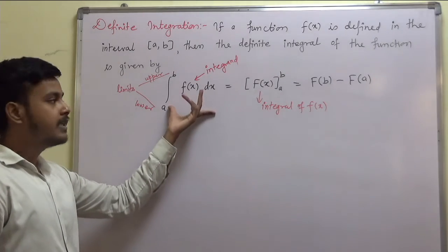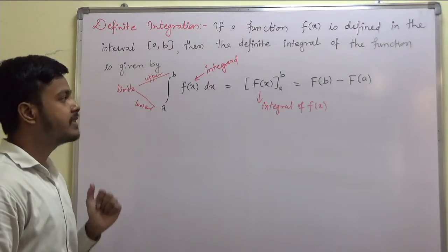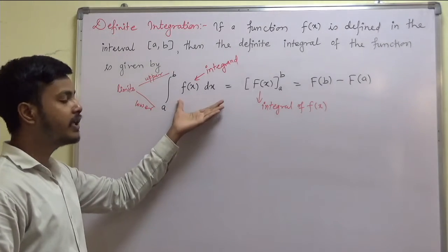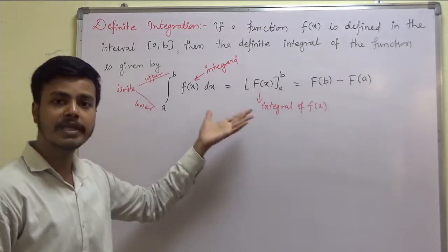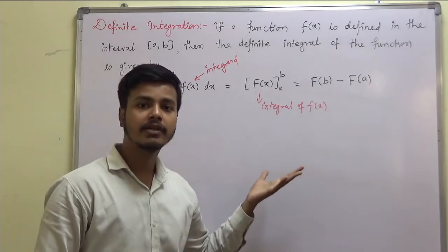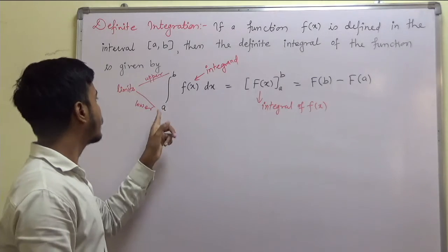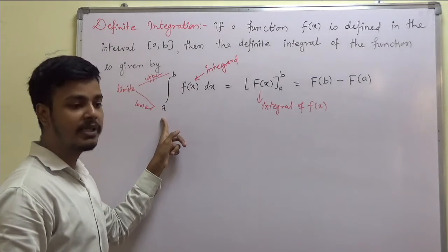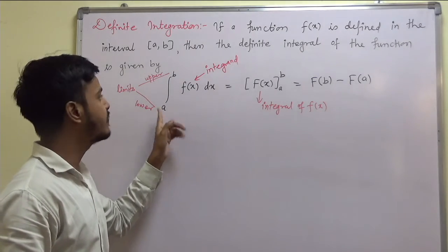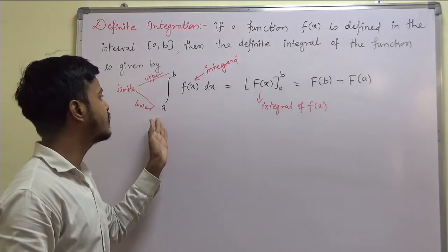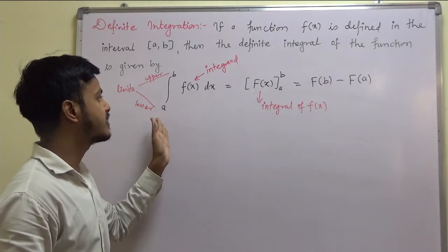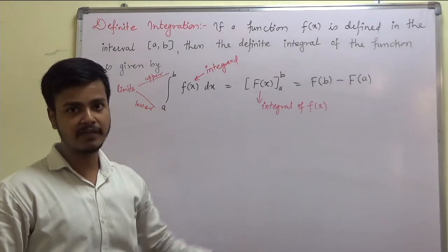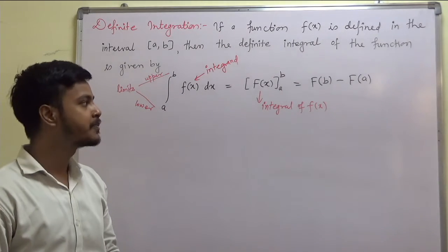This is the definite integration, and as I already told you, this represents a number — because the upper limit and lower limit are numbers, and when we substitute their values into the function we will be getting a numerical value.